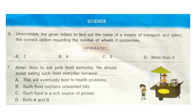The next section is science. Question 6: Unscramble the given letters to find out the name of a means of transport and select the correct option regarding the number of wheels it possesses. The correct answer is option C — 3. The word formed is rickshaw.